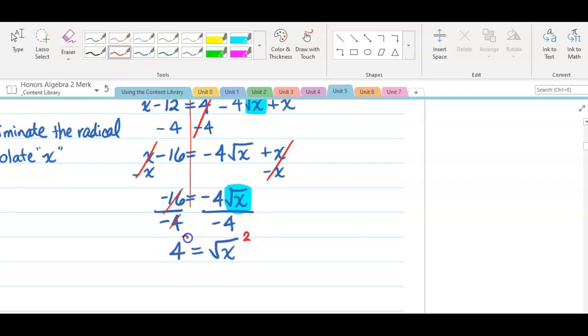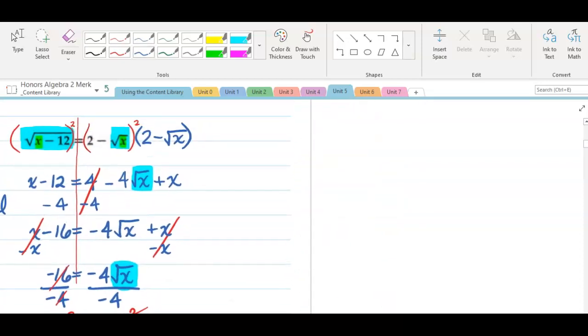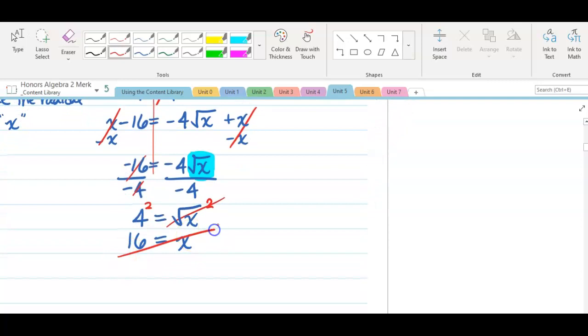On the left, we end up with a positive 4. And on the right, we have radical x. Now we're ready to square both sides to eliminate that other radical. On the left, I have 16. On the right, I have just x. So let's go back and see if this is going to work. The square root of 16 minus 12, does this equal 2 minus the square root of 16? Well, the square root of 16 minus 12 is the square root of 4. Is that equal to 2 take away 4? Because radical 16 is just 4. Radical 4 is just 2. Does 2 equal negative 2? No. So our answer is no solution.